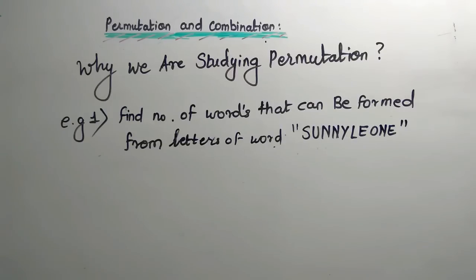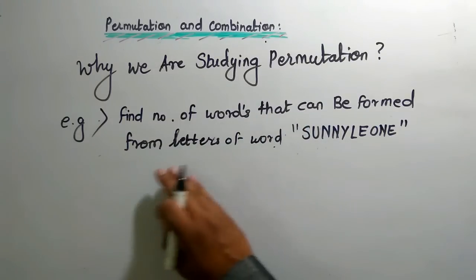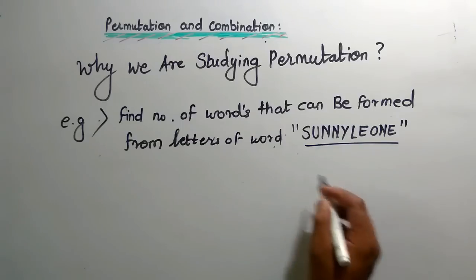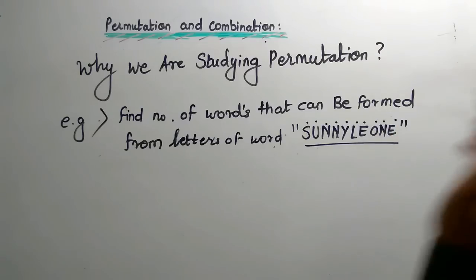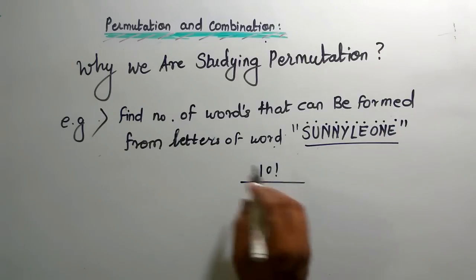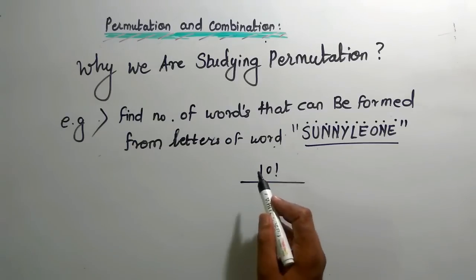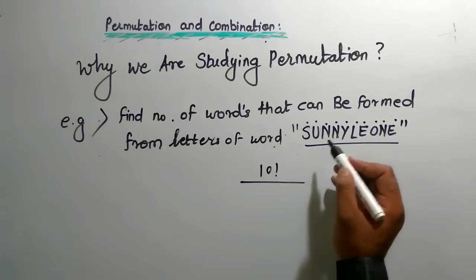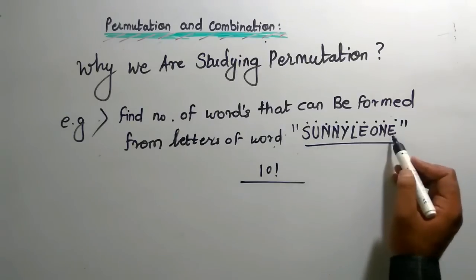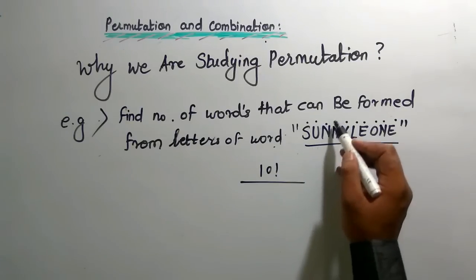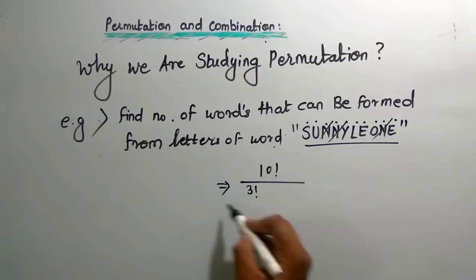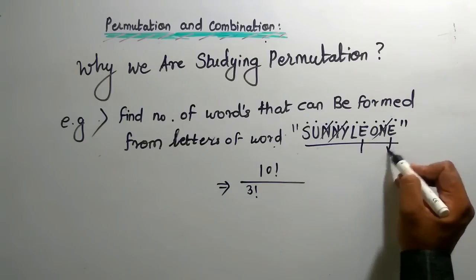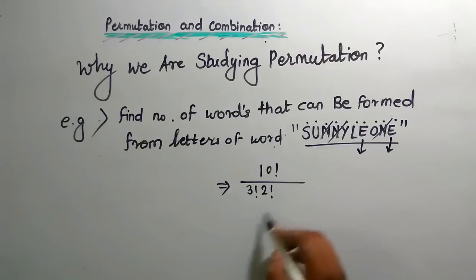This is the concept you have to remember: if repetition is there, you have to divide by the number of times the letter is repeating in the form of factorial. Next question: find the number of words that can be formed from the letters of the word SUNNY LEONE. How many letters? S, U, N, N, Y, L, E, O, N, E — ten letters, so we start with 10P10 = 10 factorial. Is there any repetition? N appears three times — so divide by 2 factorial... actually noting the N repetitions, the final answer is 10 factorial divided by the factorial of repeating counts.